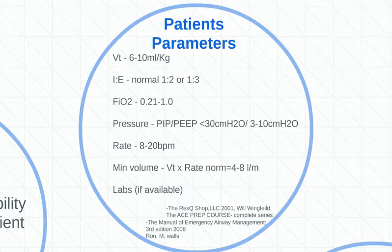So VT, or tidal volume, is six to ten mls per kg. You're going to be doing math. That doesn't mean just setting your vent to 400 every time — that's a no-no. What we do is set it to the patient's ideal body weight and set the vent to that.